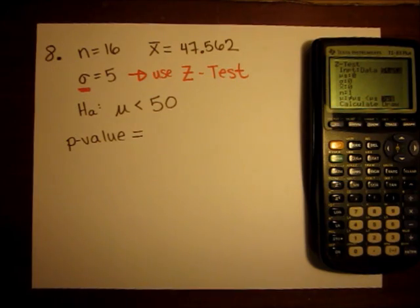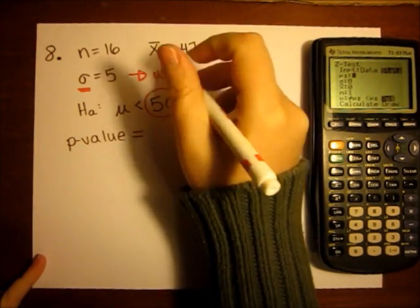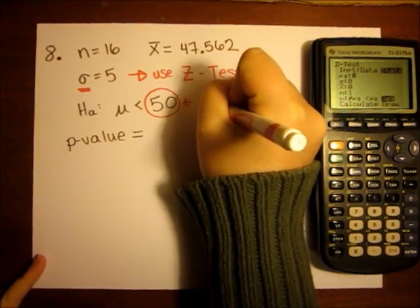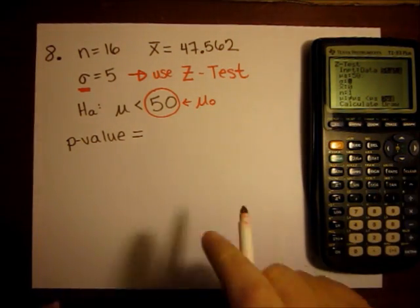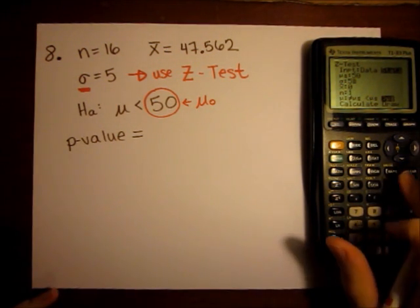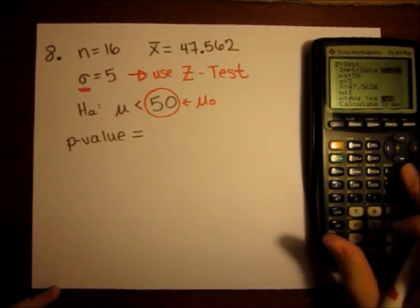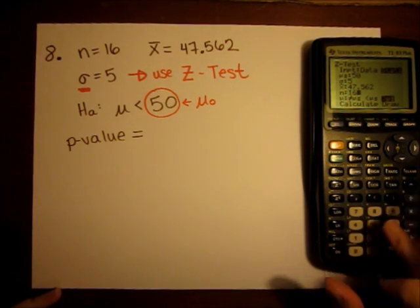Mu zero is the number from the null or alternative hypothesis. So this 50 is mu zero. Sigma is what is given to me as the standard deviation. X bar here is 47.562. N is 16.